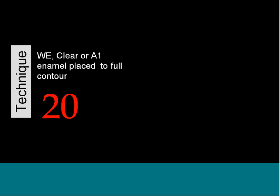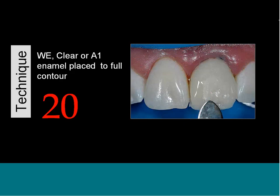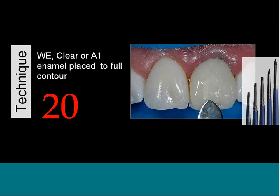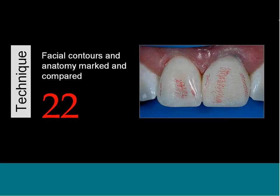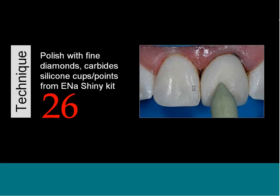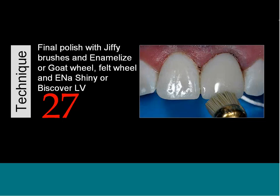Form the Mamelons with a little A2 — in nature things aren't straight across, so make them irregular — and light cure. Put some A1 over the surface. For the final layer you could use WE, Clear, or A1 enamel. I like to use T-Pens, which are brushes from Mycerium that come in different shapes — stiffer ones work well on the anterior. Then do bulk reduction with discs, mark facial contours to identify concavities and convexities, polish with fine diamonds, carbides, or silicone cups and points. The Enos Shiny Kit is a combination of all those. Final polish with a Jiffy brush, then reamelize on a goat wheel or felt wheel. You could also put a final layer of Biscover LV and light cure that.